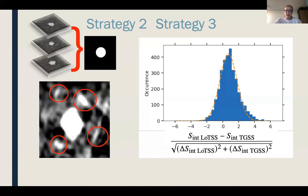Finally, using two widely different surveys, we have to take into account the flux scale alignment. This figure on the right here shows for bright point sources the difference in integrated flux density between the two surveys normalized by the errors. For perfectly aligned flux scales, we expect to see a Gaussian centered around zero with a width of one.